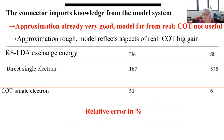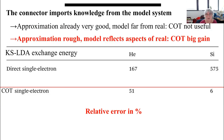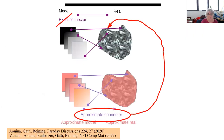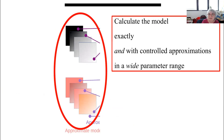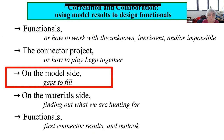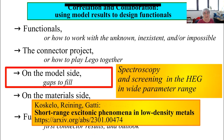Looking at the results: in helium we got the error down by a factor of three — still a bad result — but in silicon we got the error down by a factor of a hundred, which is now acceptable. This is actually a very simple calculation, and it illustrates one key point: if the model is far from the real system, as with helium (very inhomogeneous, very far from the homogeneous electron gas), you do not gain so much from the connector approach. But if, as in the case of silicon, the material is more homogeneous, you have a huge gain.